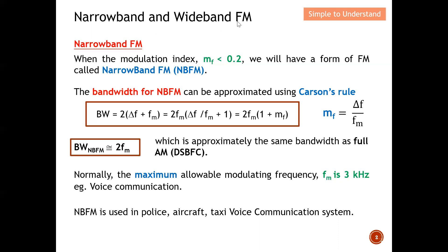Let's differentiate narrow band and wide band FM. For narrow band FM, when the modulation index is less than 0.2, we have a form of FM called narrow band FM. The narrow band FM bandwidth can be approximated using Carson's rule — this is the equation used to calculate bandwidth.